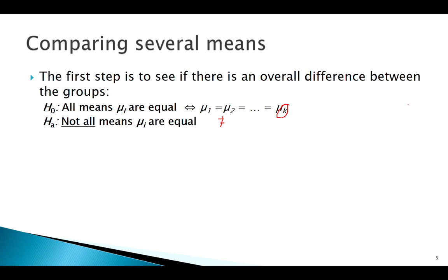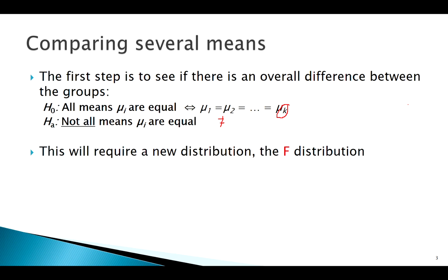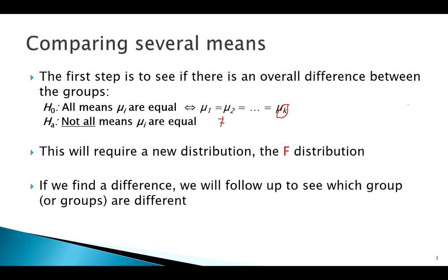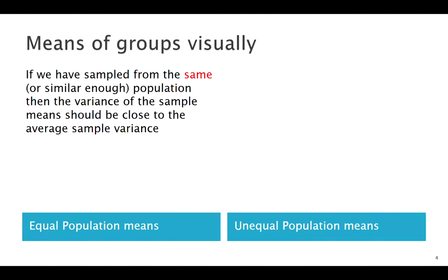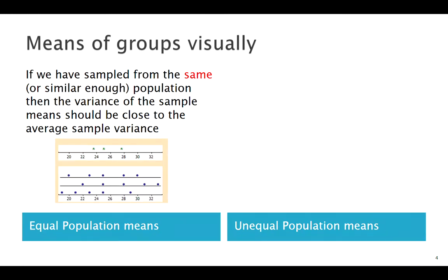When we've been working with means before, we used Z or T, but it turns out Z or T can't handle three or more groups. So we're going to need a new distribution — the F distribution. Now, these methods are called analysis of variance, and you might be wondering: why is this called analysis of variance if we're talking about means? What this is really looking at is the dispersion or variance of those means to decide if they're equal.